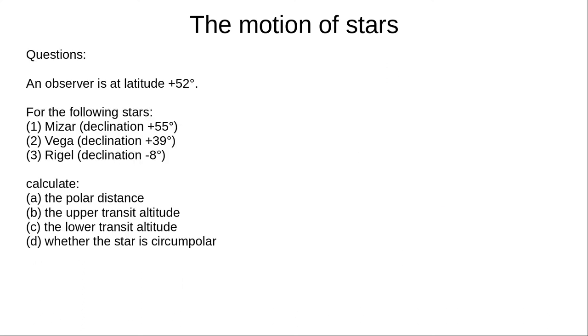Try the following questions. For each star, calculate its polar distance, upper and lower transit altitudes, and whether the star is circumpolar. The observer latitude is plus 52 degrees, or 52 degrees north, and the stars are Mizar, declination plus 55 degrees, Vega, declination plus 39 degrees, and Rigel, declination minus 8 degrees. Pause the video now to try them.